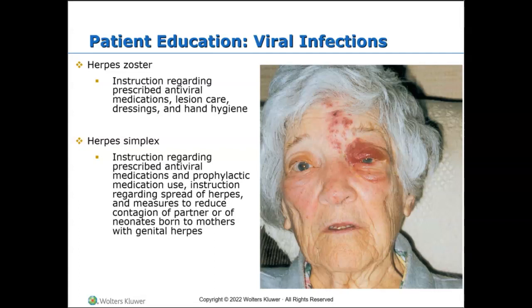Instruct the patient about their antiviral medications and how to take them appropriately. Instruct the patient how to care for the lesions, how to do their dressings, and how to clean their hands — they must have meticulous hand hygiene so no extra bacteria or foreign material is introduced into those lesions. Therapy may include NSAIDs. For the lesions, apply wet dressings with 5% aluminum acetate for 30 to 60 minutes, four to six times a day. Give calamine lotion to help reduce the itch response.